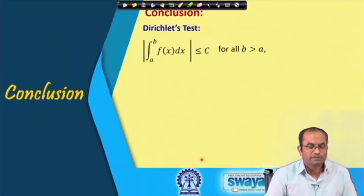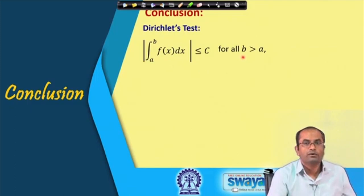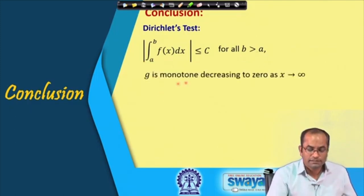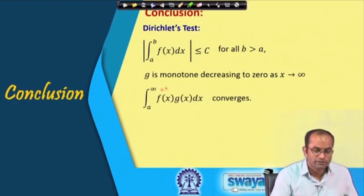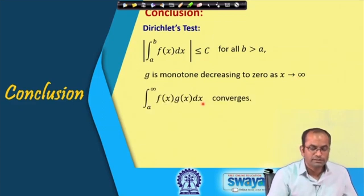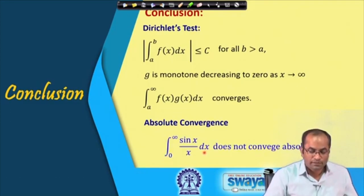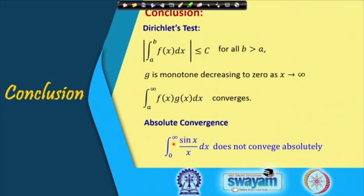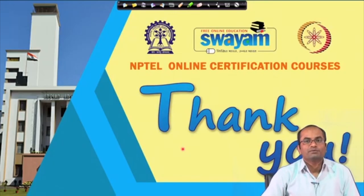In conclusion, the Dirichlet test states that if the integrals of f from a to b are uniformly bounded for all b, and g is monotone decreasing to 0 as x → ∞, then the integral from a to infinity of f(x)g(x) dx converges. We also discussed absolute convergence and showed the classical example that sin(x)/x is integrable on [0,∞) but not absolutely integrable. These are the references used for preparing these lectures. Thank you very much.